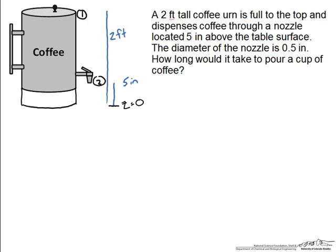Next, after labeling our diagram as such, we want to make our assumptions to solve this problem. With the general simplified form of the Bernoulli equation there are a number of assumptions that we have to make.